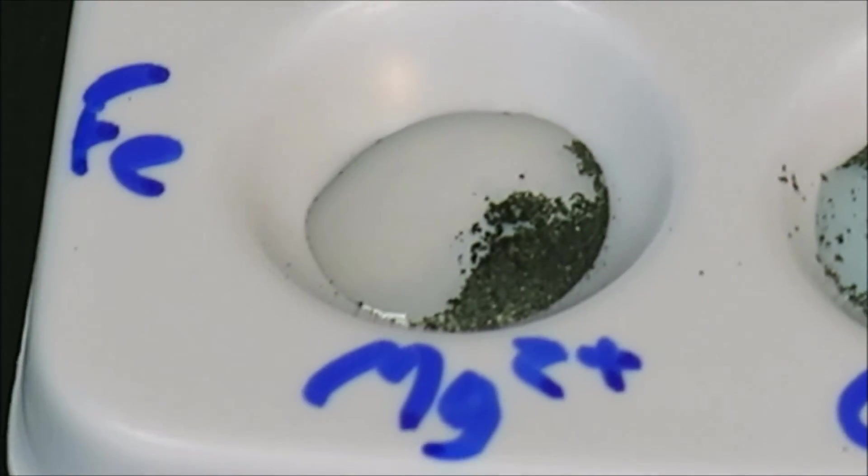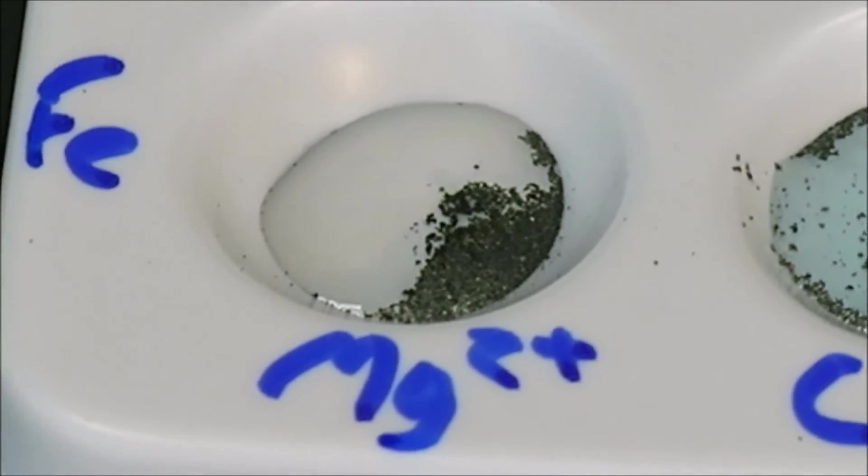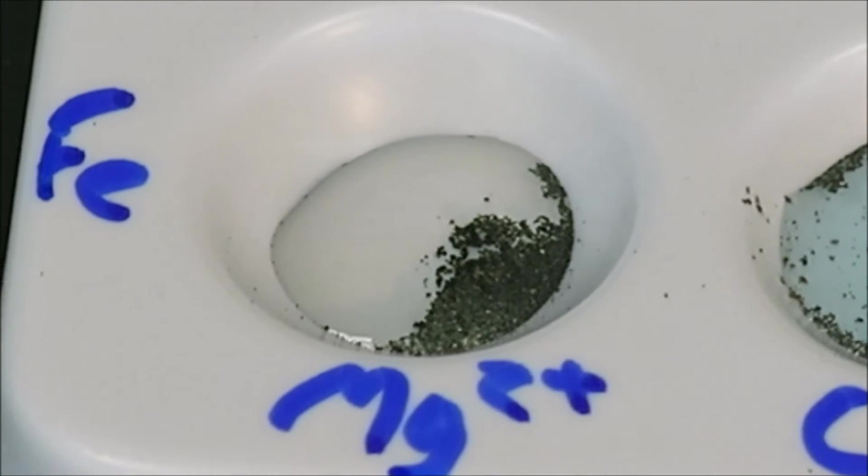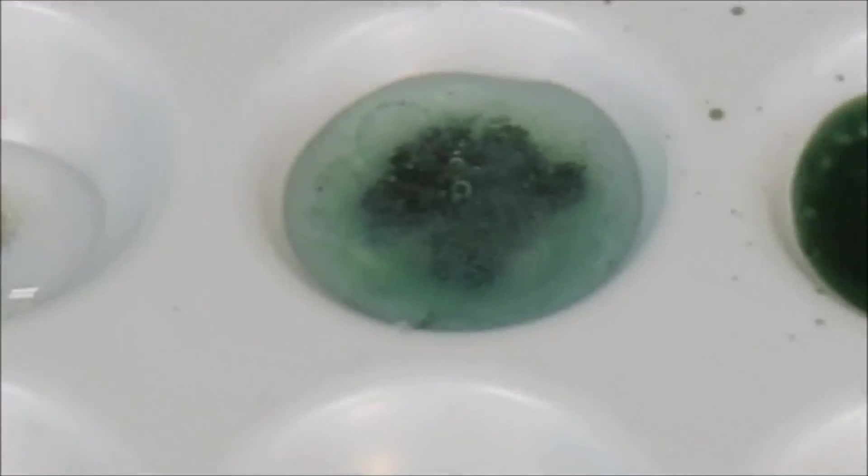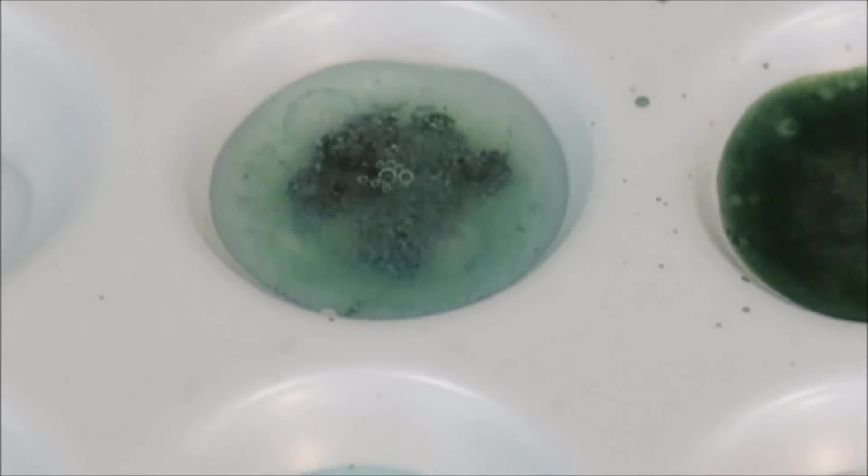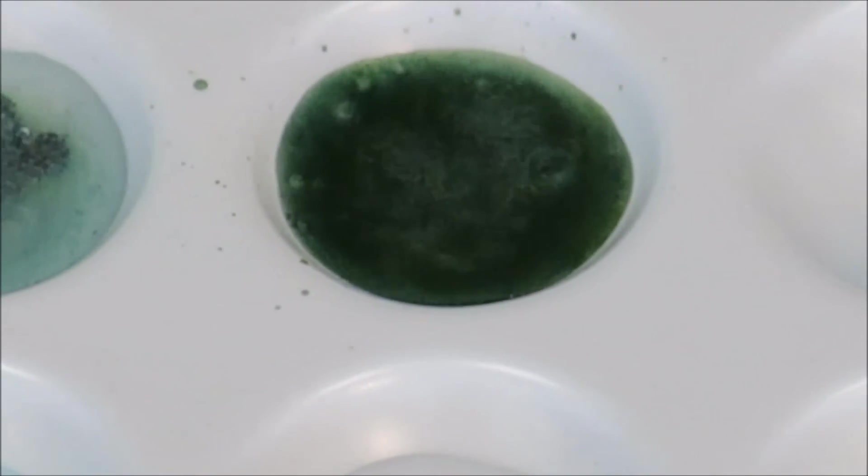We take a look at the final well here. And the magnesium ions have not had any effect on the solid iron. Again, in the first set, we could see that the magnesium heavily reacted with our copper two-plus and our iron two-plus solutions.